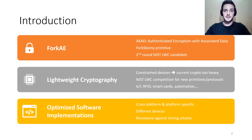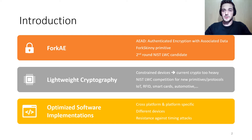4Ki is an authenticated encryption scheme based on the novel Fork Skinny primitive. 4Ki is currently a second round candidate in the NIST lightweight crypto competition. The goal of this competition is to define a new set of standards better suited for constrained devices, such as those used in the Internet of Things, smart cards, or the automotive industry.